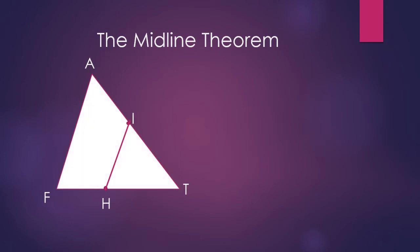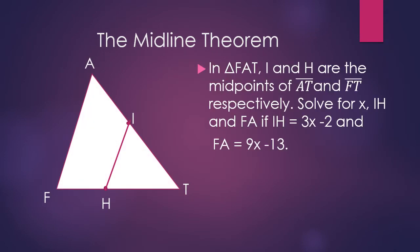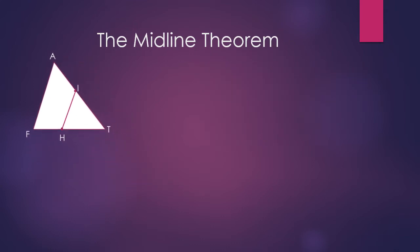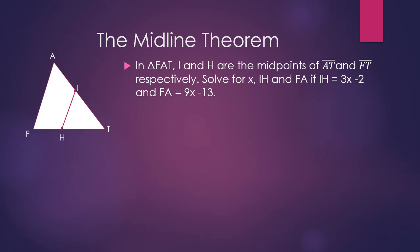In triangle FAT, I and H are the midpoints of AT and FT respectively. Solve for X, IH, and FA, given that IH equals 3X minus 2 and FA equals 9X minus 13. We know by the midline theorem that IH equals one half FA.